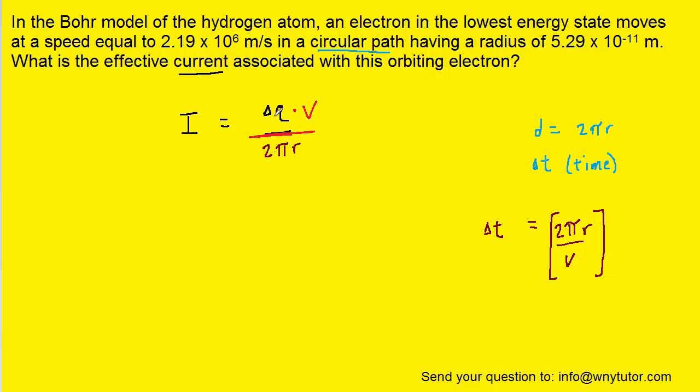We know for example the radius, we know the speed of the electron, and we even know the amount of charge because this is an electron and an electron has a known quantity of charge equal to 1.6 times 10 to the minus 19th coulombs.